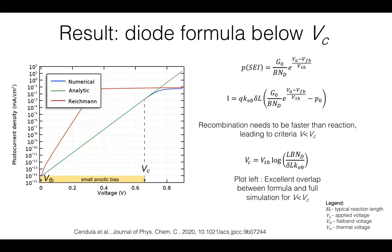And this voltage range from the flat band to the critical voltage, we denote the small anodic bias regime, here left on the carrier concentration plot.